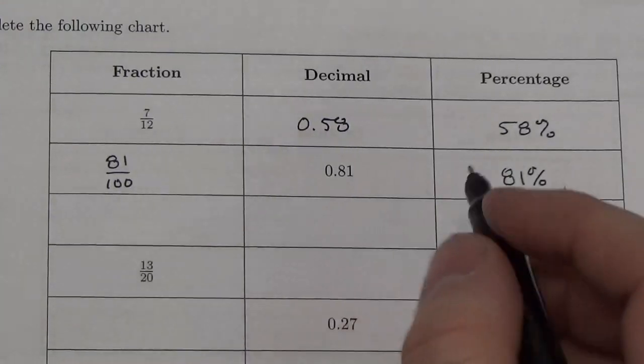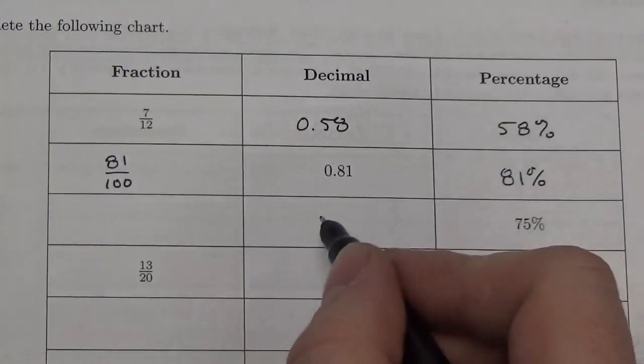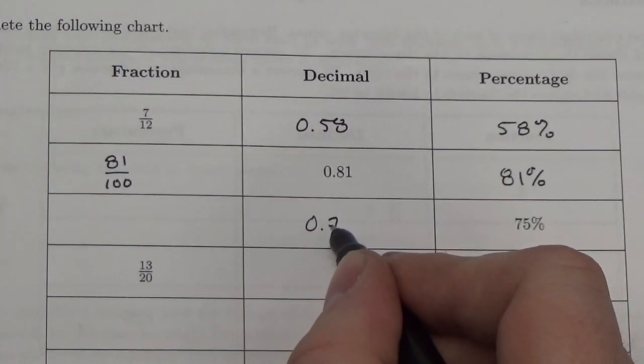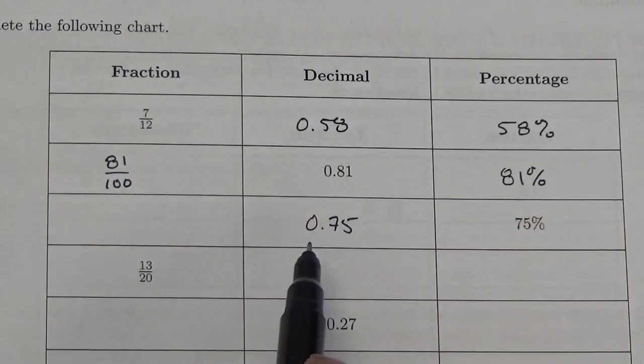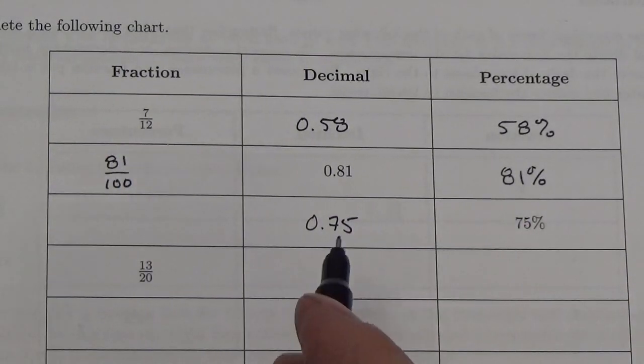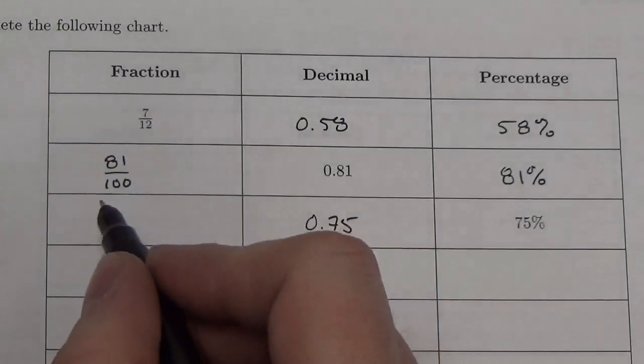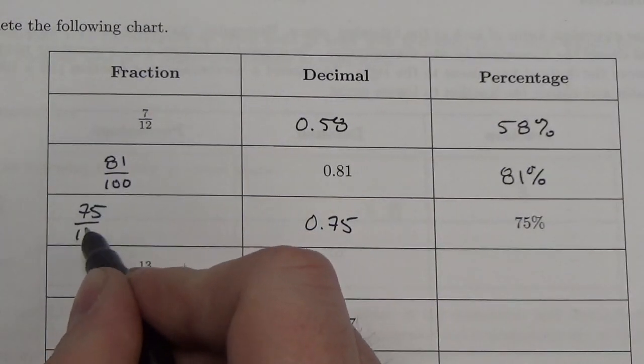With 75%, I can write that as a decimal really easily, just by moving the decimal the opposite direction. So, it becomes 0.75. And then, again, to put it over here as a fraction, I simply need to write it the way I say it. That's 75 one-hundredths.